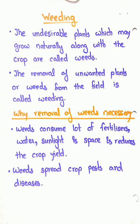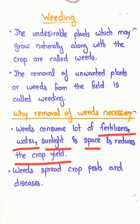Now, why is weeding necessary? Why is removal of weeds important? Weeds consume a lot of fertilizers, water, sunlight, and space, and they reduce the crop yield. If weeds remain in the crop, the fertilizers we put in the soil will be consumed by them. Water, sunlight, and soil nutrients will also be consumed, and as a result, the main crop will get fewer resources and the crop yield will obviously reduce.